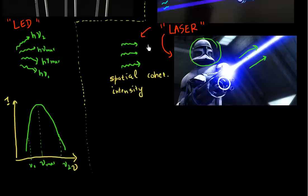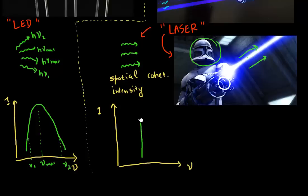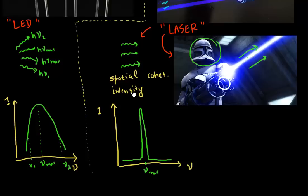If I do the same thing for a laser and graph intensity as a function of frequency, I see a very sharp peak. Most of the light is coming out at one single frequency, with a very low background at all other frequencies. So most of the intensity is concentrated at one particular frequency. That is why the light from a laser appears to be a very monochromatic light source — all photons are coming out at this one particular frequency.